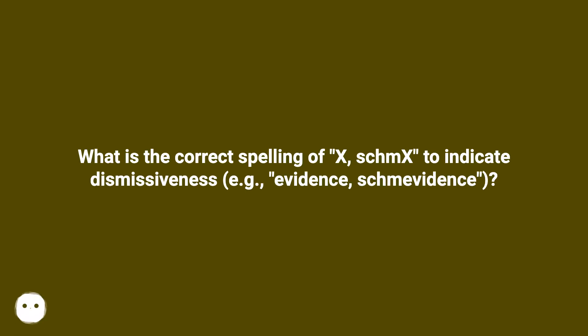What is the correct spelling of X — S-C-H-M-X or S-H-M-X — to indicate dismissiveness? For example, 'evidence, shm-evidence?'